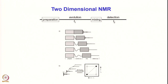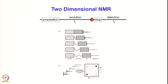In two-dimensional NMR you have to generate two frequency axes. In normal FT-NMR you had one time domain signal, and after Fourier transformation you get the frequency domain spectrum. Now we want to generate two frequency axes. We divide the time axis into periods: the preparation period, where we prepare the spin system in equilibrium or non-equilibrium state; then the evolution time T1; then the mixing time; and finally the detection time T2, where the actual FID is collected.